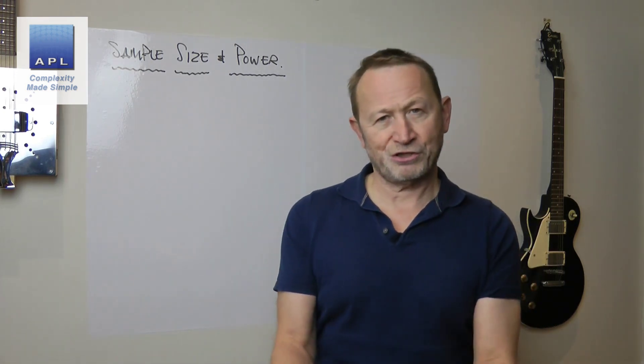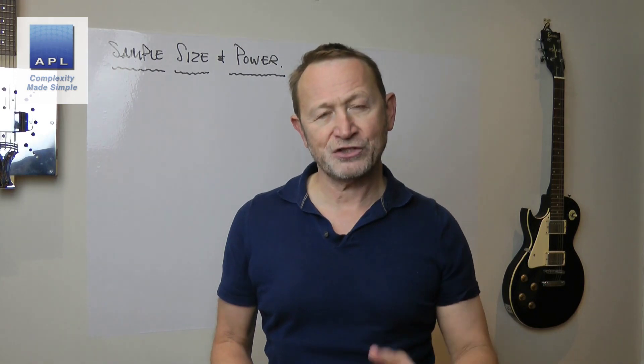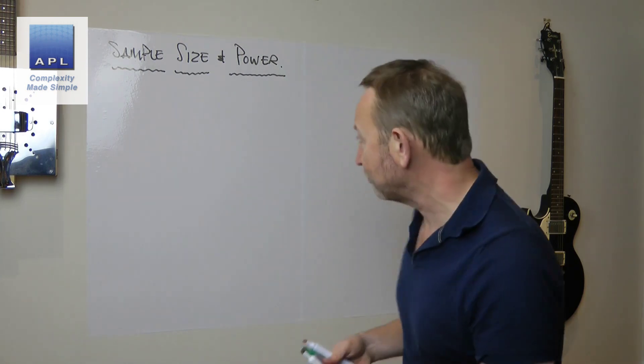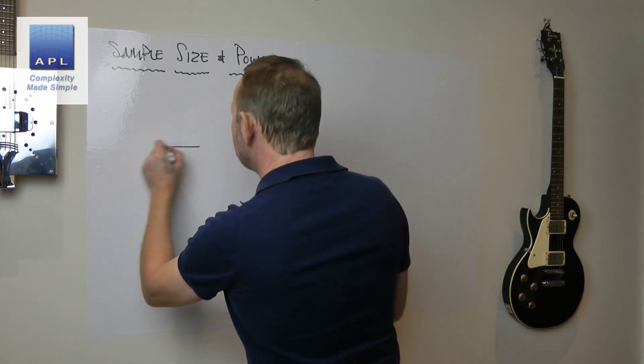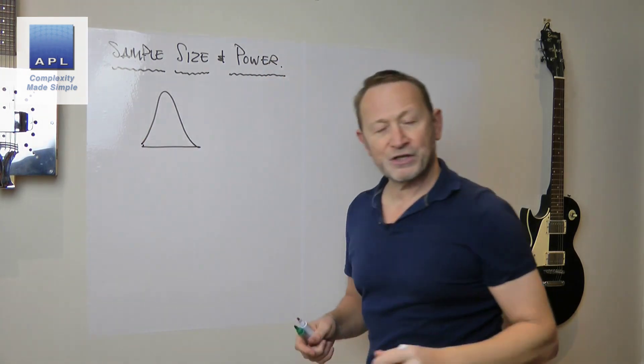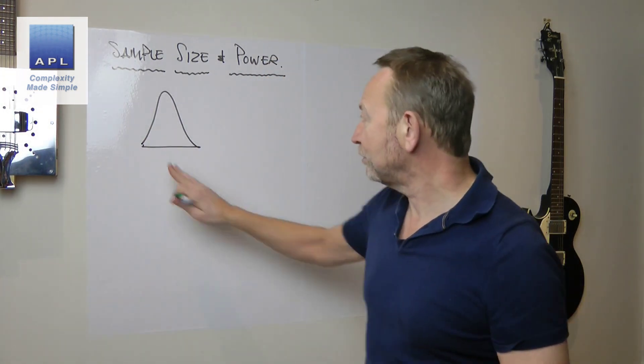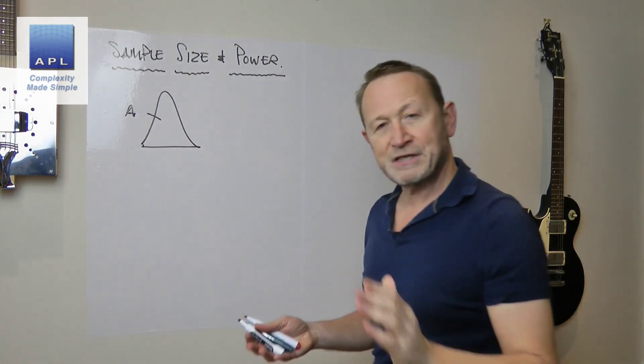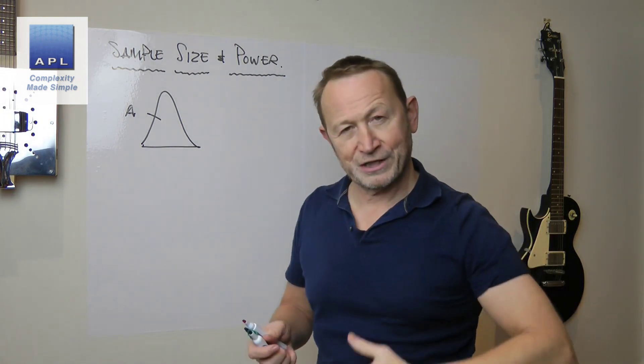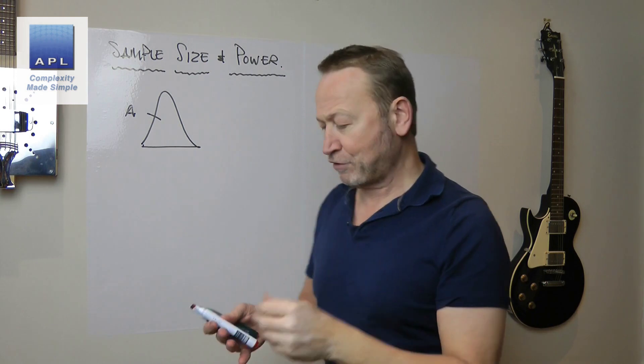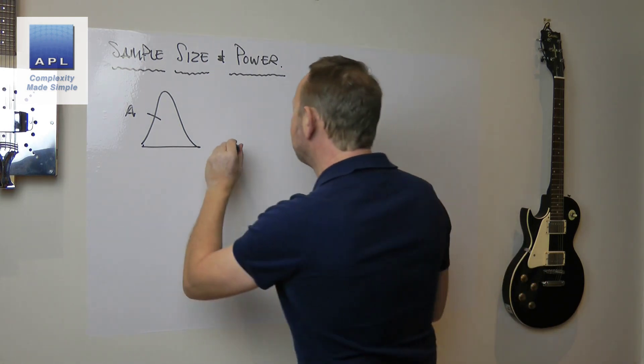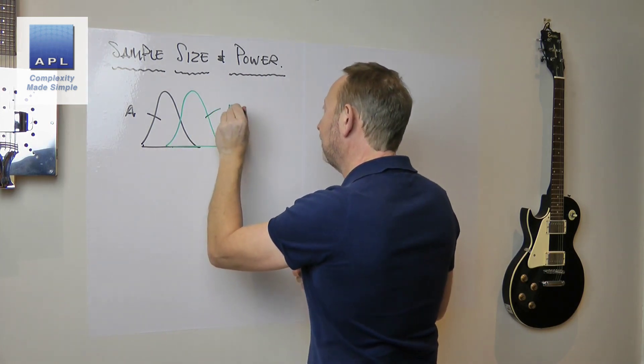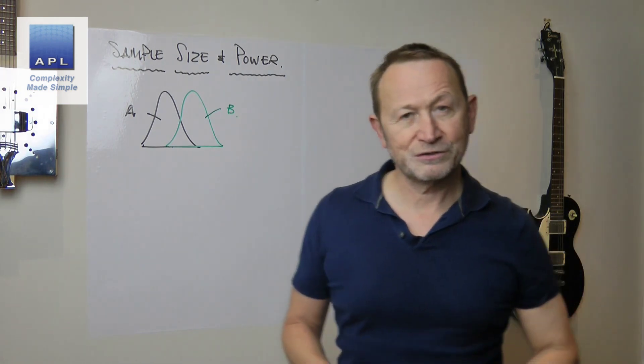When you do a scientific test or engineering test, what you're trying to do is move the results. You're trying to say, well, I put in some setting, when I used a certain amount of material, I got result A. What I'm now going to do is adjust the process and I want to observe a different result. I want to see if the result shifts and I get result B.